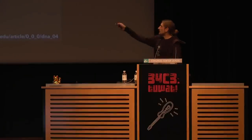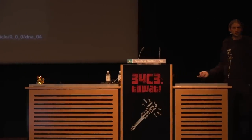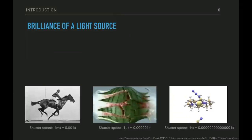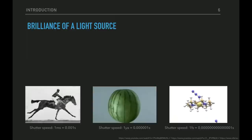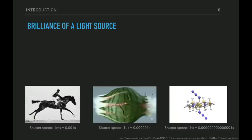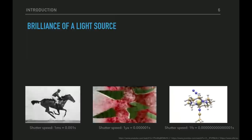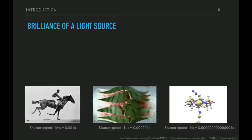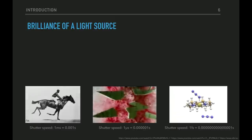The thing is, X-ray tubes are very limited in brightness, and this becomes a problem if you want to study something which moves. To make a picture of something moving, you have to decrease the shutter speed. For a running horse, a shutter speed of one millisecond is sufficient. But to watch a bullet smashing a melon, you need 1000 frames per second more. And if you want to go to chemical reactions, the shutter speed is orders beyond that.